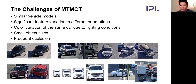In MTMCT, there are several common challenges that need to be overcome. The first is similar vehicle models. The second is significant feature variation in different orientations. The third is color variation of the same car due to lighting conditions. Additionally, small objects are hard to detect. The last challenge is occlusion — due to the field of view, tracked cars are sometimes occluded by each other, increasing the difficulty of tracking.